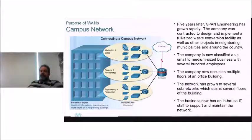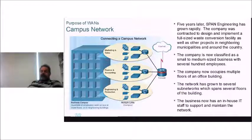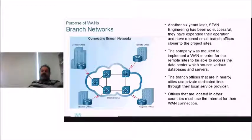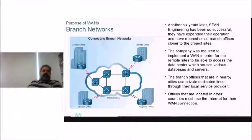Five years later, Span Engineering is growing rapidly — contracted to design and implement full-size waste conversion facilities in neighboring municipalities and around the country. Now a small-to-medium business with several hundred employees, the company occupies multiple floors of an office building with several sub-networks. Six years after that, they've opened small branch offices closer to project sites, requiring a WAN between different sites. Branch offices in nearby cities use private dedicated lines; further away they use the internet for WAN connections.